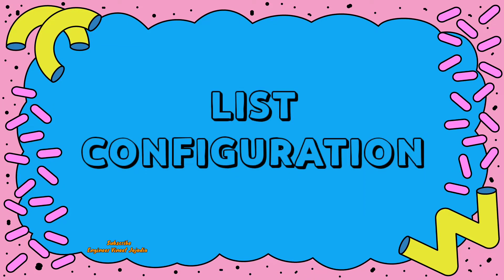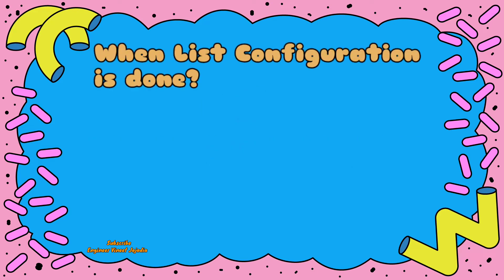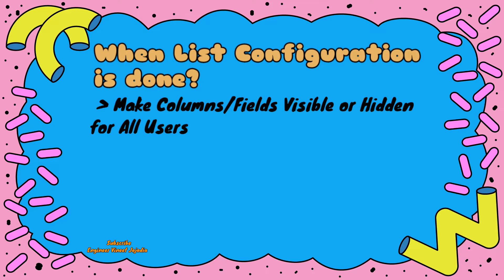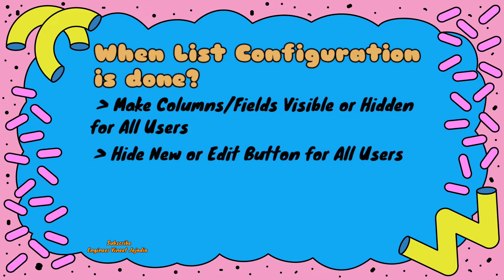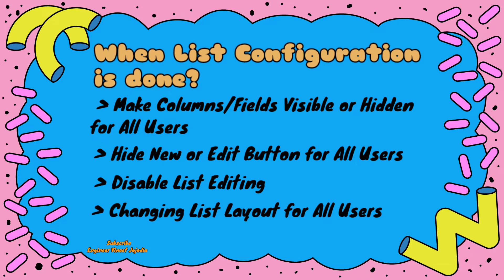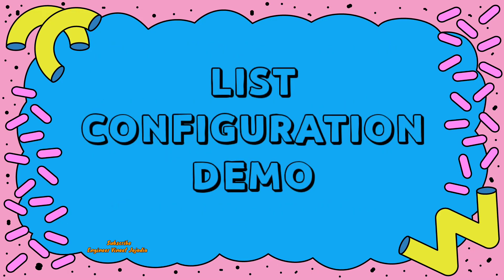Let's see how we can configure a list in ServiceNow. A user should perform the configuration of a list when there are client requirements, such as: certain fields need to be hidden or visible for all users, the list edit or new button has to be removed, disabling list editing, or changing the layout of the list for all users. You have to configure the list according to those requirements.